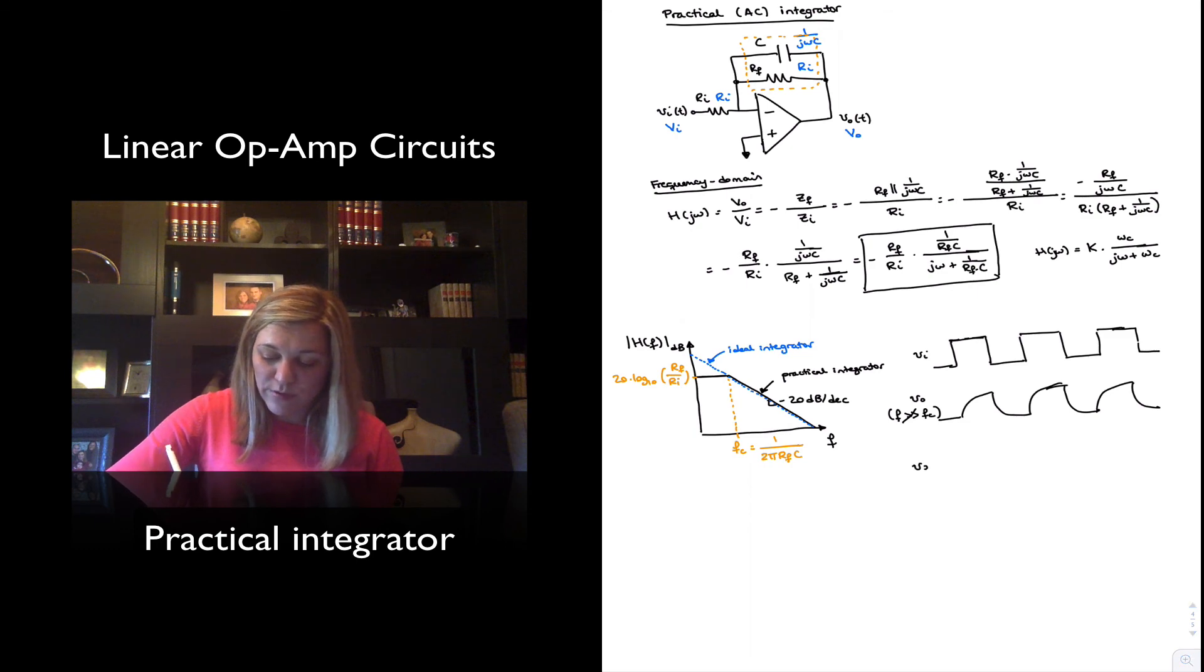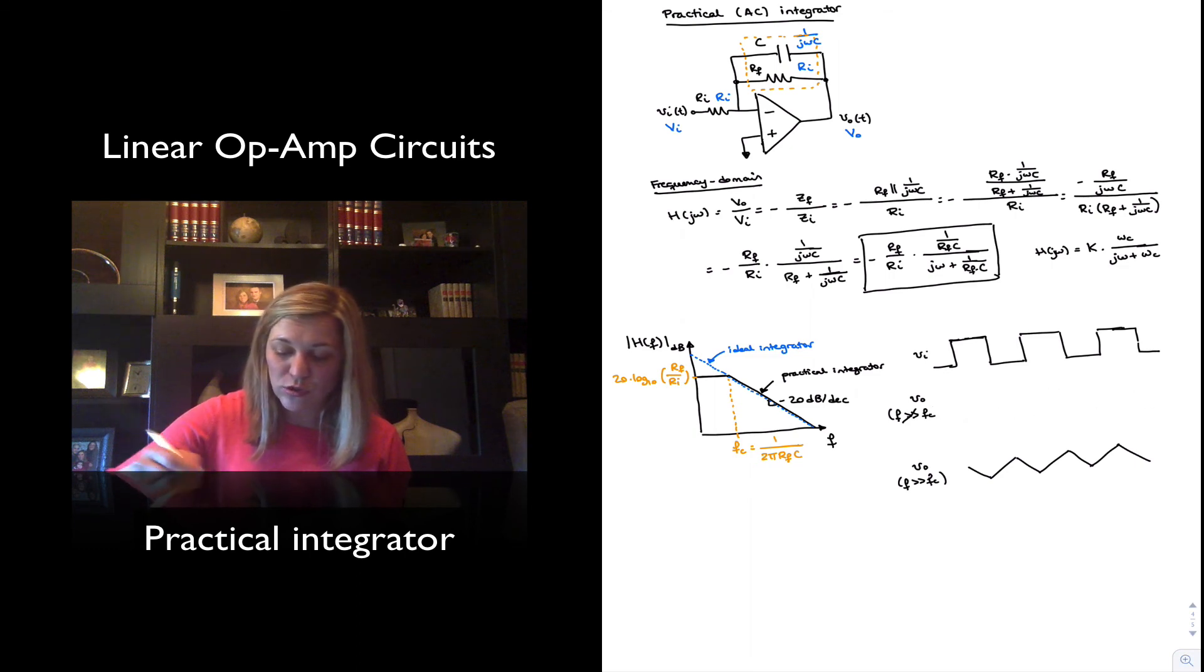For cases where the frequency of the signal is much higher than the corner frequency, then the value of the circuit will approach more and more that of an ideal integrator. And so it will be essentially a triangular wave. Now notice that I didn't represent that in the top signal, but this is an integrating type of circuit, and so when the input is going positive, the output of the circuit is going negative and vice versa.